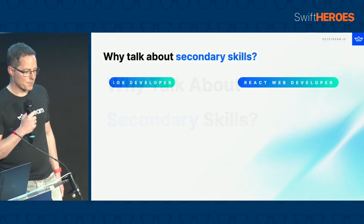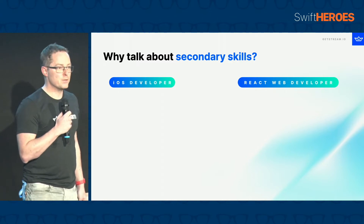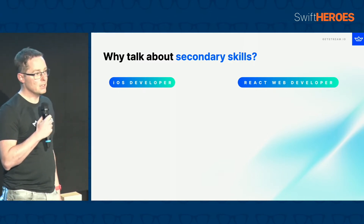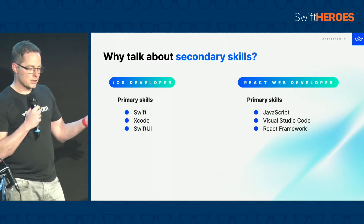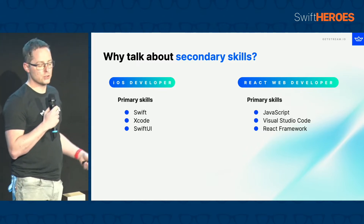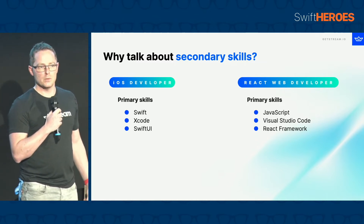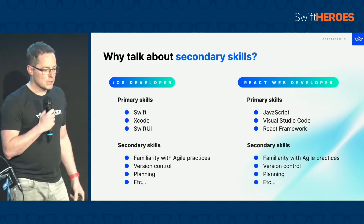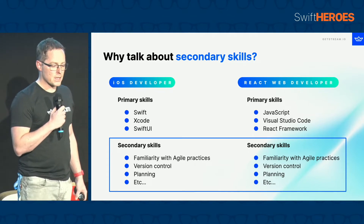Why talk about secondary skills? As you can see, as a primary skill as an iOS developer you have your language, Xcode, SwiftUI. With a React web developer, you have JavaScript, Visual Studio Code, and the React framework. But there's also a whole bunch of secondary skills that are important for you as a software developer, and you might notice they're exactly the same for both kinds of developers.